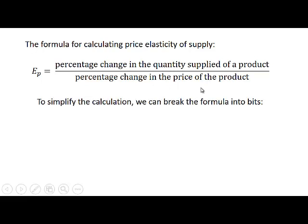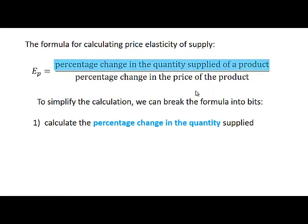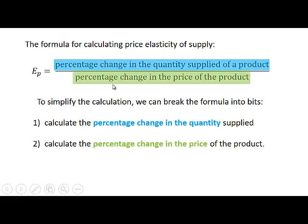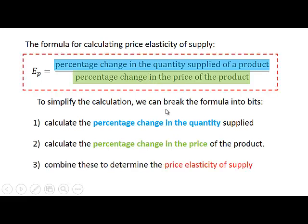To simplify the calculation we break it into steps. First step: calculate the percentage change in the quantity supplied. Second step: calculate the percentage change in the price of the product. Third step: combine these two to determine the price elasticity of supply.